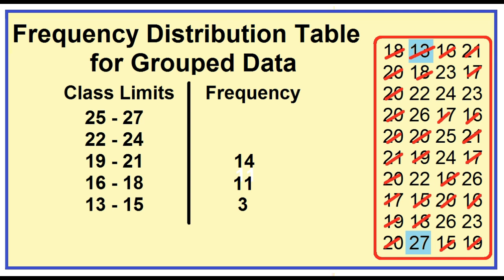22, 22, 22, 22, 23, 24, 24, 24, 23, 23, 23, 23 — the frequency for the class 22 to 24 is 7.